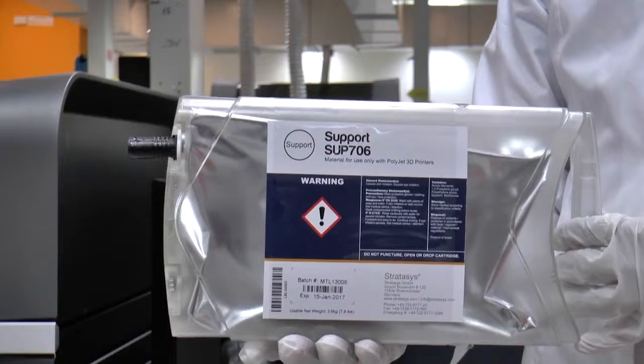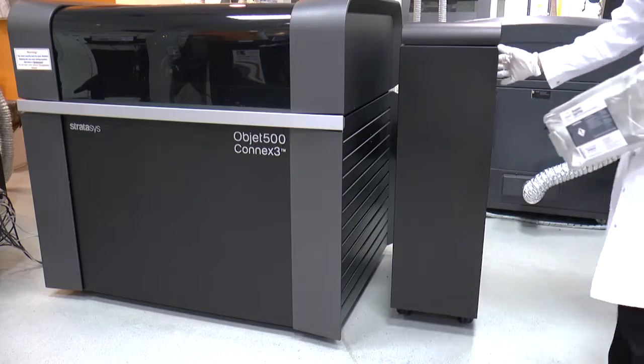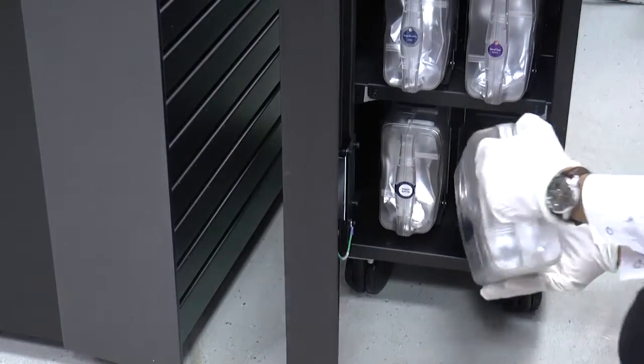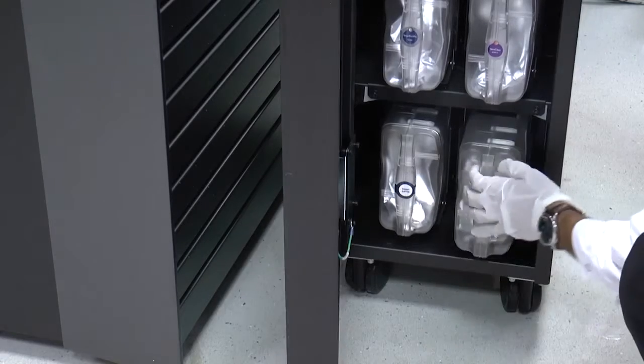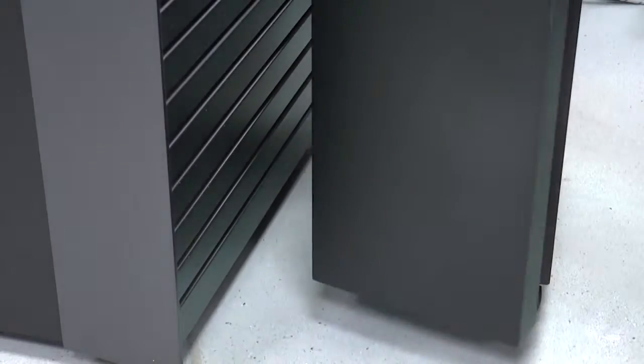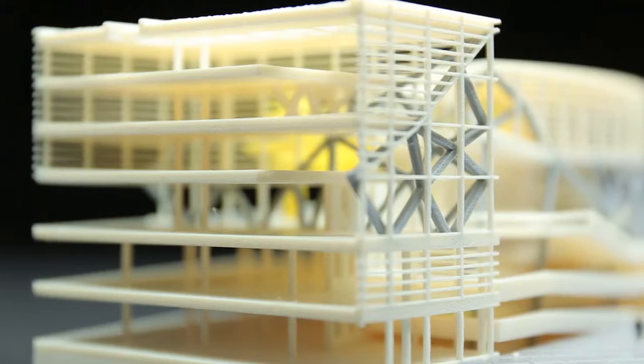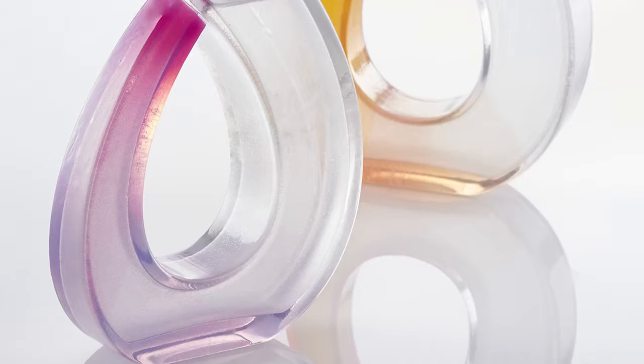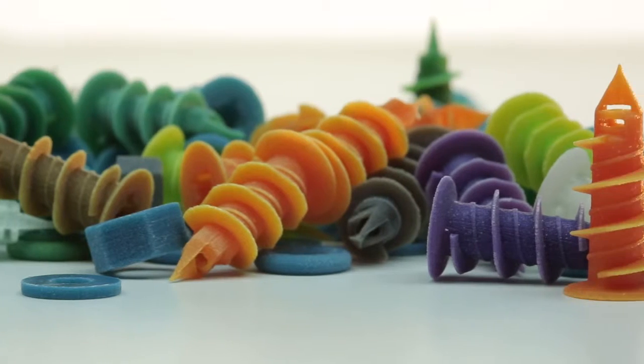This video explains how to use SUP706 soluble support material for Stratasys Connex 3D printers. SUP706 is especially effective for 3D printed parts with intricate geometries, internal cavities, as well as batches of small parts.